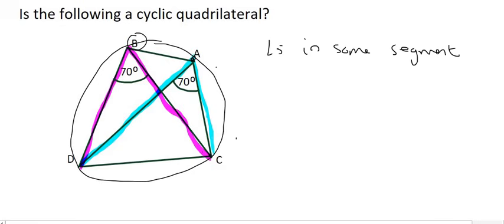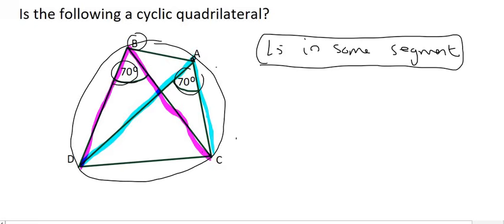So, if you are trying to prove that something is a cyclic quadrilateral and you see the bowtie kind of shape forming, then you should always think about using these angles in the same segment in reverse. So, they'll give you the two angles, the 70 and the 70.